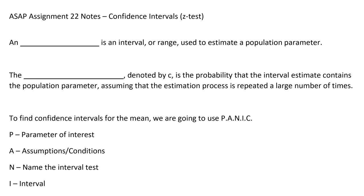In this video we're going to be talking about confidence intervals. An interval estimate is an interval or range used to estimate a population parameter. So instead of just saying this is around 80, you would say it's somewhere between 78 and 82 — instead of getting an exact number, you're giving a range that it lies between.